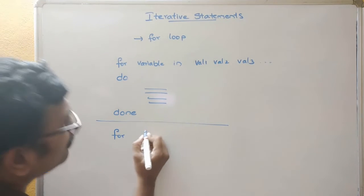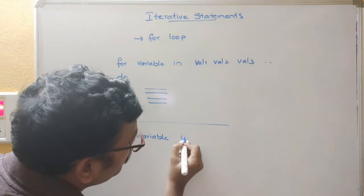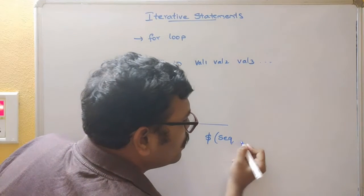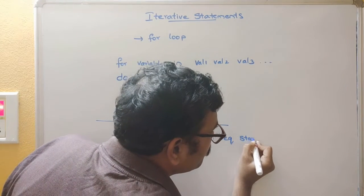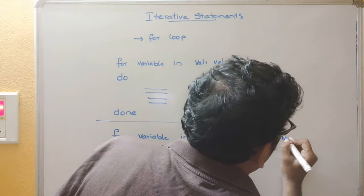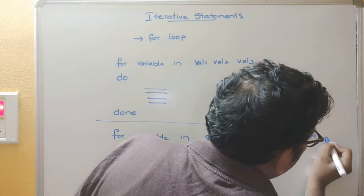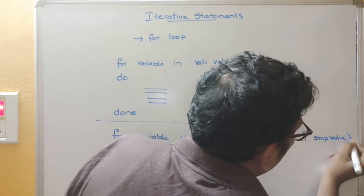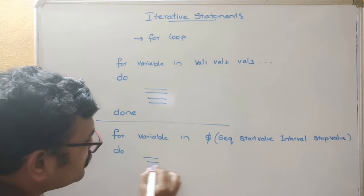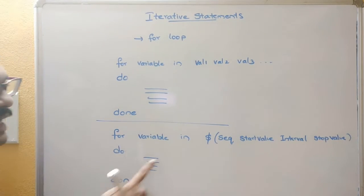This can also be done in another syntax. For the same variable, use 'in $(seq start_value interval stop_value)', then 'do', write down the instructions, and 'done'.